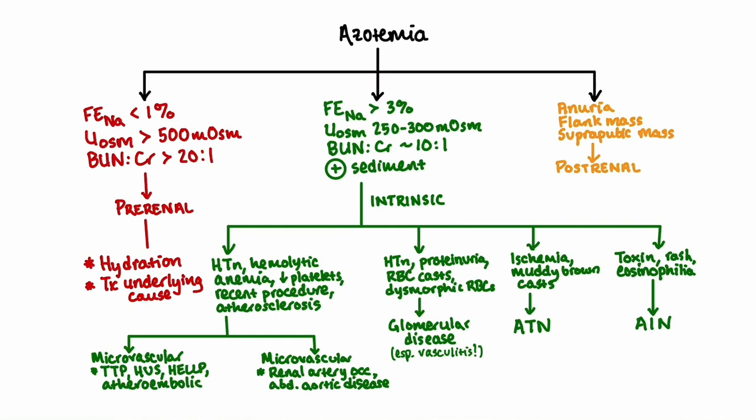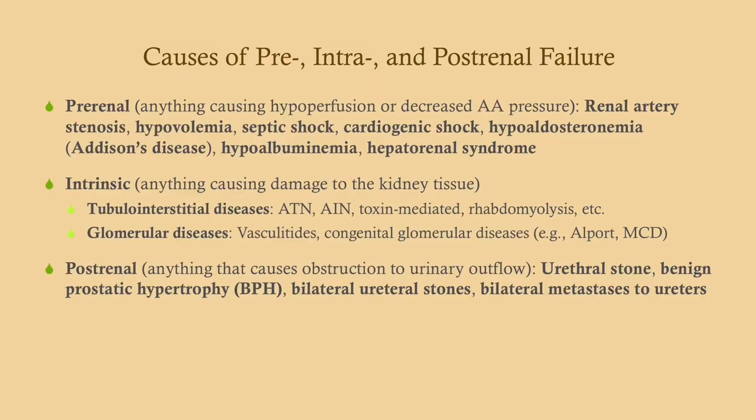With post-renal failure, there is usually obstruction — look for anuria or difficulty urinating, a flank mass pointing to hydronephrosis, or a suprapubic mass pointing to a distended bladder. There are many causes of pre-renal, intrinsic, and post-renal failure, and I will be going over all of them in the subsequent videos.